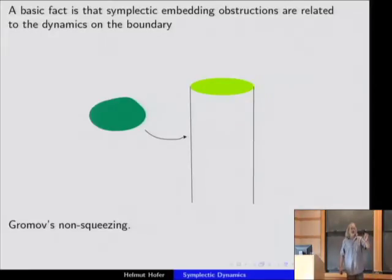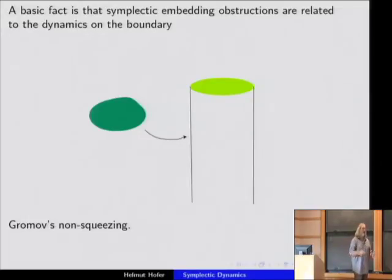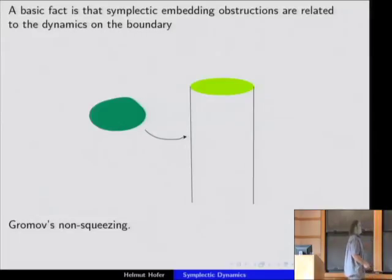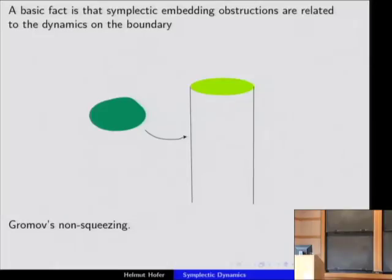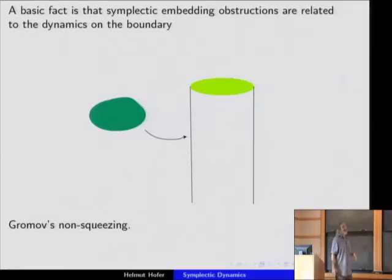This tells you that the symplectic structure already lives on a lower level than just C¹, which you need to define it — at least in the naive way. This actually says that the symplectic structure is already visible on a C⁰ level. You might have thought that maybe you can fold it in and make the cylinder arbitrarily thin, but you can't.